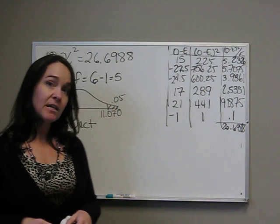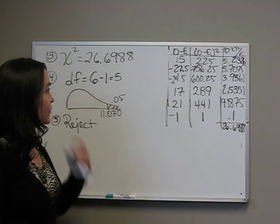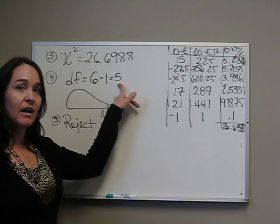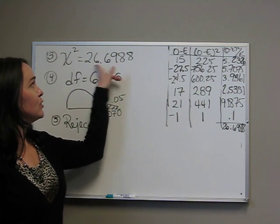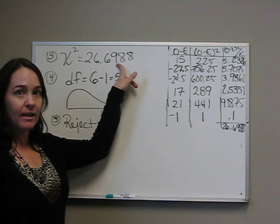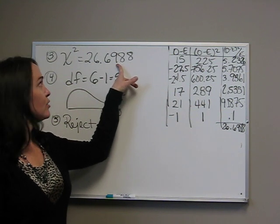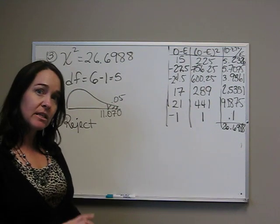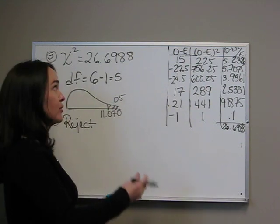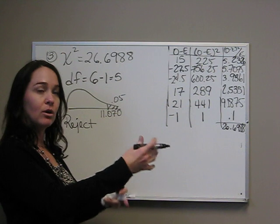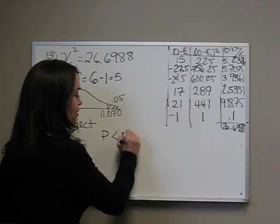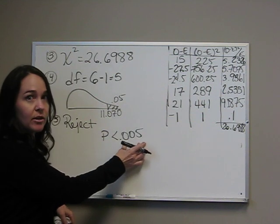If we were to do the p value, look at degrees of freedom of five on the chi-squared table. You're looking for the number 26.6988. We can see that there is no number even as large as this. We also see that area is getting smaller and smaller as our chi-squared values are getting larger. So all we can tell is that p is less than 0.005, which is our smallest area.